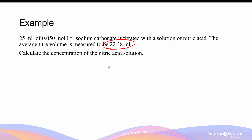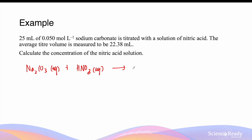Once I've calculated the titer volume from the burette, I can then proceed with my calculations of the concentration of my unknown solution. For this particular titration, we should write a balanced equation. Sodium carbonate, which is my standard solution, reacts with nitric acid, which is my unknown solution. It produces the salt sodium nitrate, water, and carbon dioxide gas. We need to put 2 in front of sodium nitrate to have two sodiums on both sides, and put 2 in front of nitric acid so there are two nitrate ions on both sides.